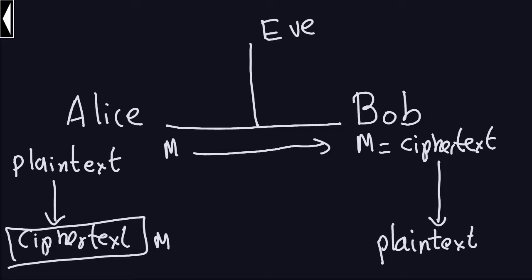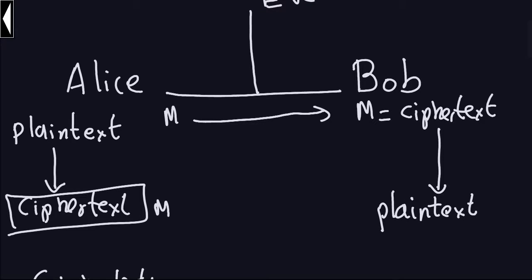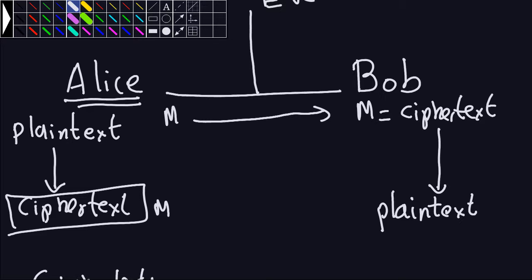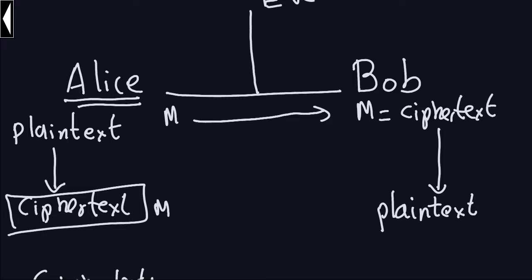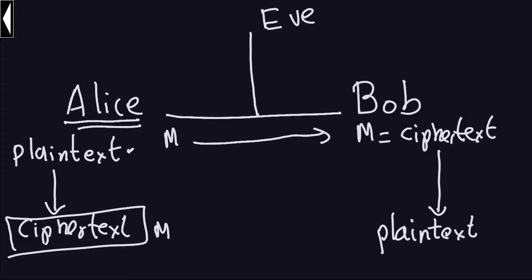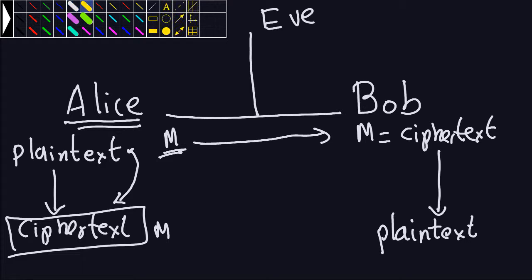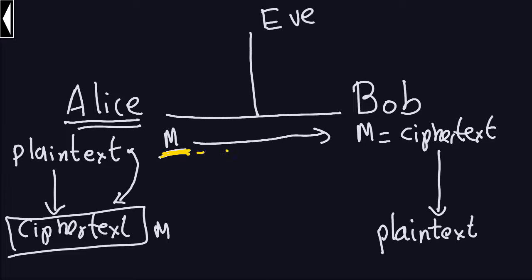This is part three of the first example. Let's recall what we have been doing: Alice wanted to send a message to Bob. The message was 'meet Carlos.' Because we have an insecure channel, she took the plain text and transformed it into cipher text. We denoted cipher text by M, and she sent it to Bob. Now Bob has received the cipher text and needs to get back the plain text.